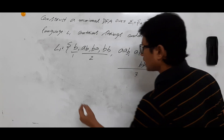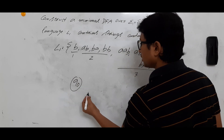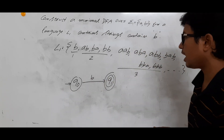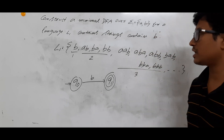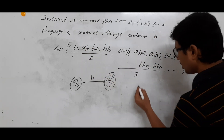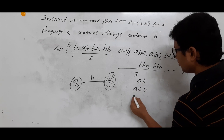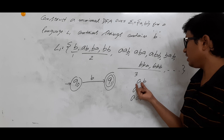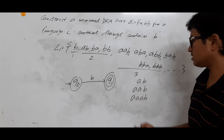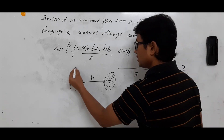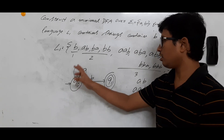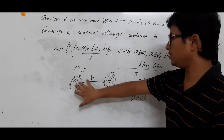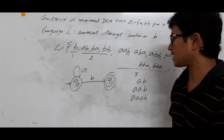Now let me construct the basic skeleton. You are in state q0. If you have seen b you should accept, so from the initial state on b you reach a final state q1. For strings like ab, aab, aaab — all these contain b and should be accepted. So from q0 on a you go to q0 itself, and on b you go to q1.